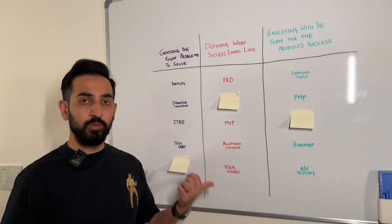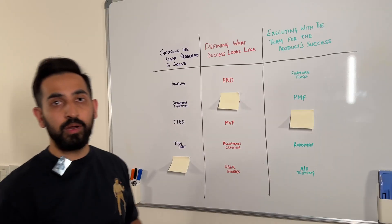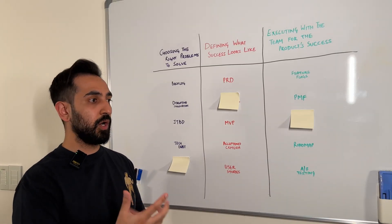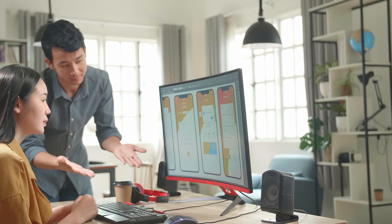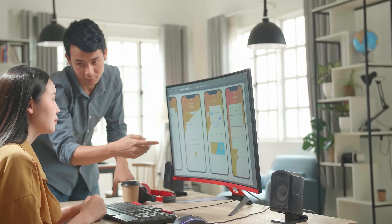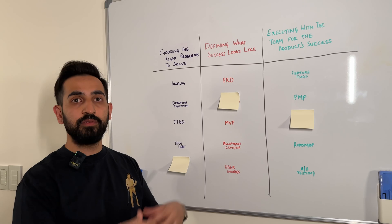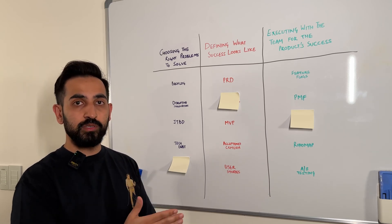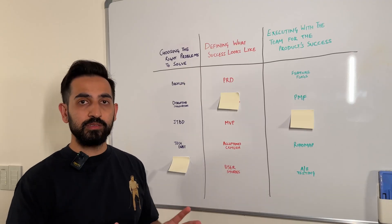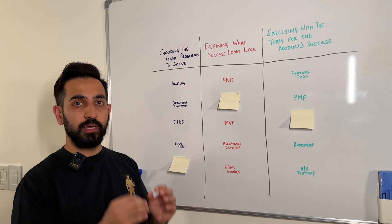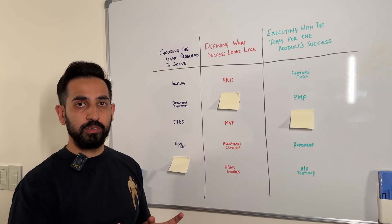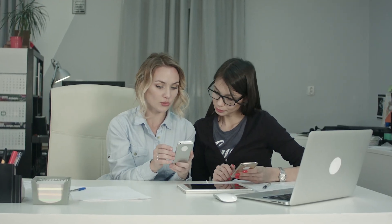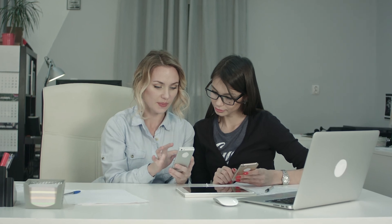Another common term is user stories, which form a part of the PRD itself. User stories are a way of seeing the product's features from the eyes of the customer. They are written from the perspective of the customer, such as: 'As a user, I would like to see X because Y.' This helps everyone understand why they are building every part and every feature in a product and what the actual goal of that feature or user story is.